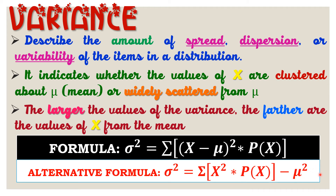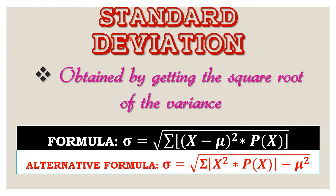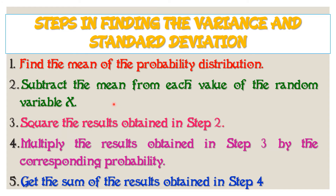Aside from variance, we have standard deviation, which is obtained by getting the square root of the variance. Standard deviation dictates the average distance of each variable from the mean. Its formula is just the square root of the variance formula — we add the radical sign and remove the square on the lowercase sigma. Here are the steps in finding the variance and standard deviation: first, find the mean of the probability distribution; second, subtract the mean from each value of random variable x; third, square the results; fourth, multiply the results by the corresponding probability; and fifth, get the sum of the results.